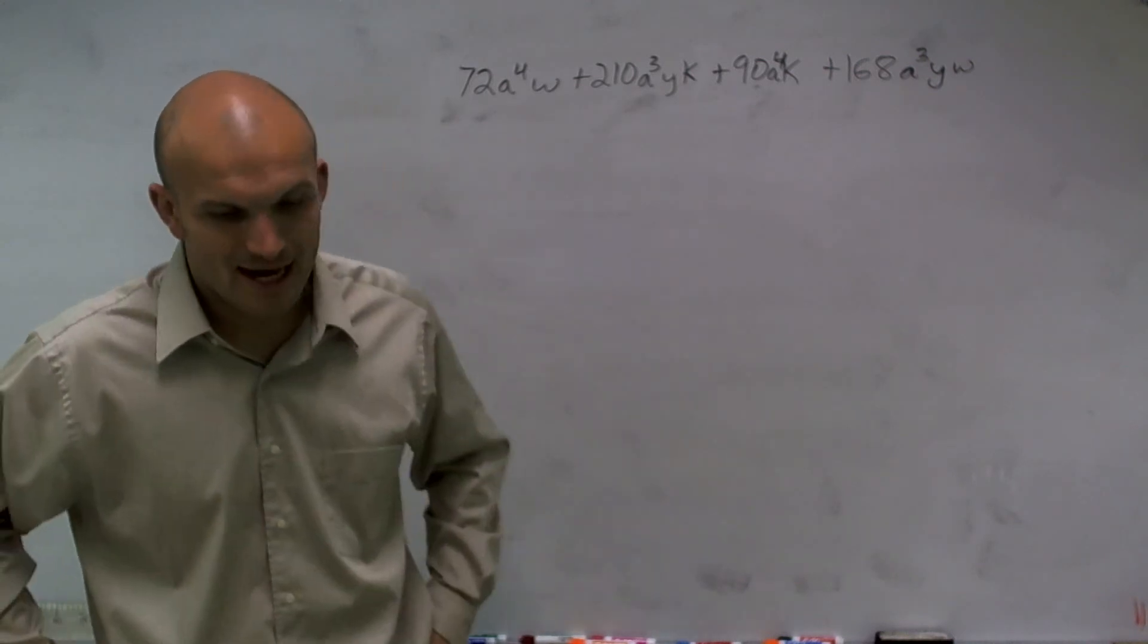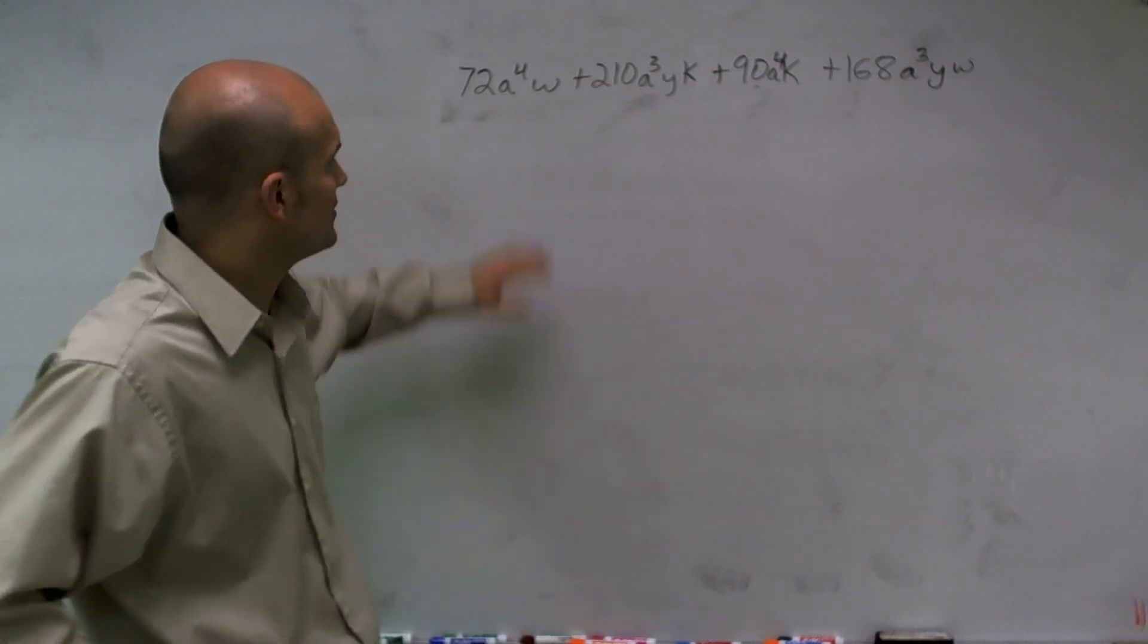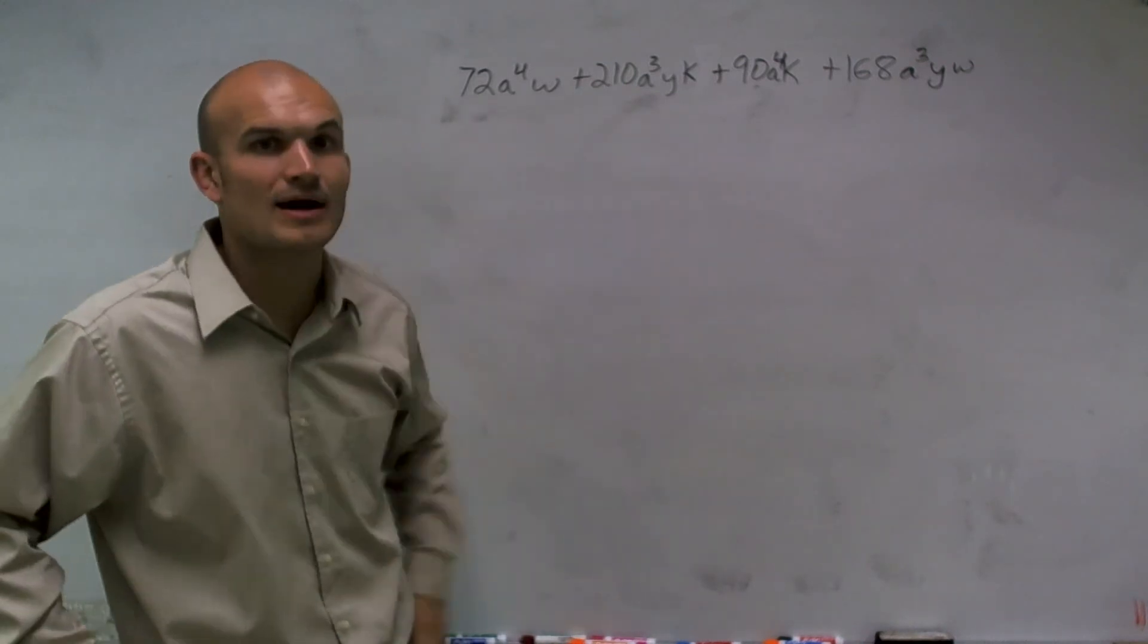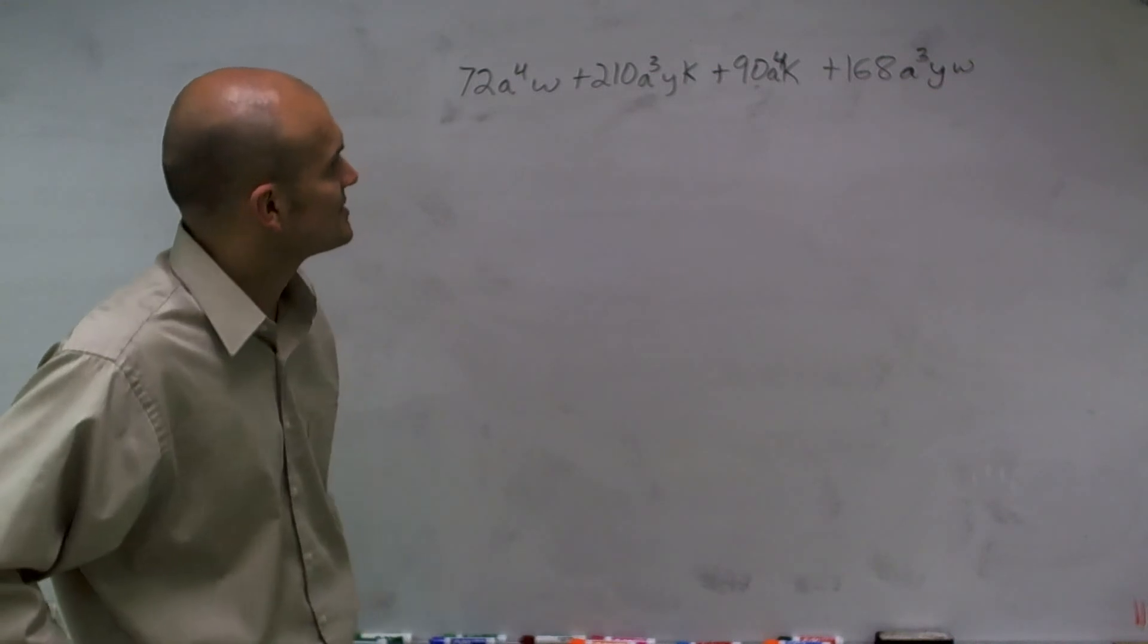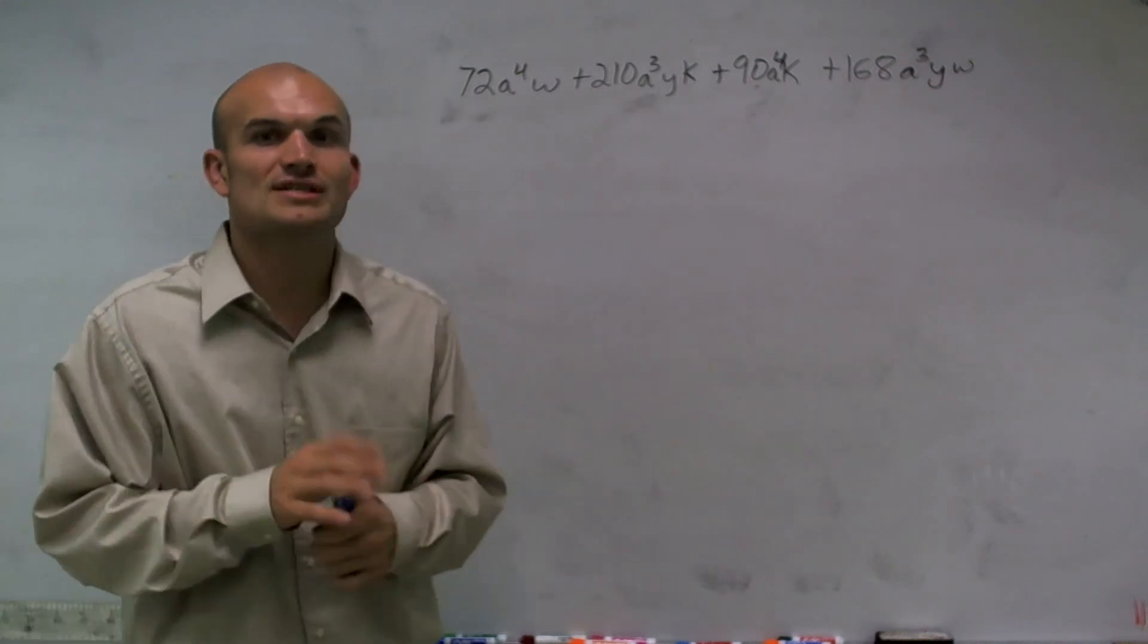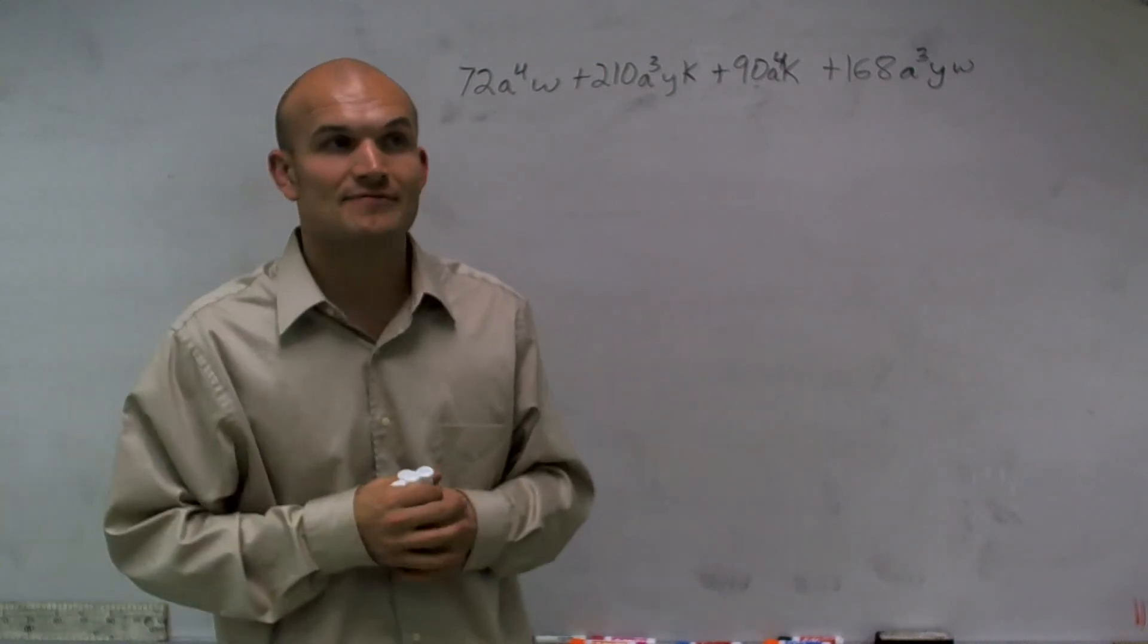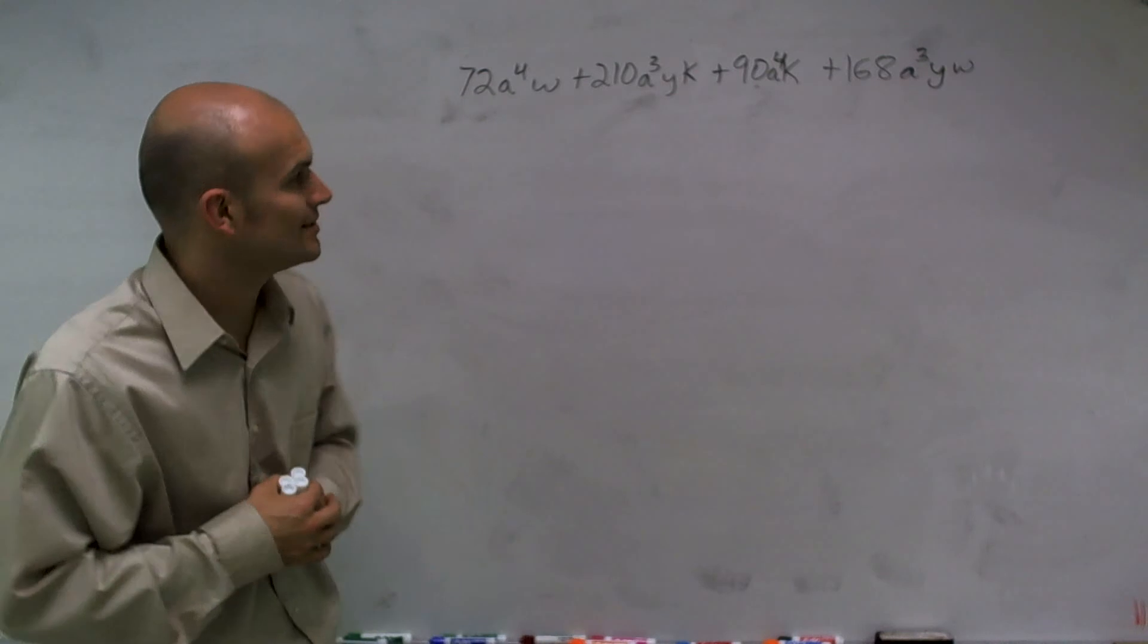But before I get into that, I look at all my letters, and I'm actually going to go about a different route with this. I'm going to factor out the GCF right at the end. What I'm going to do is factor by grouping first, and then I'll factor out any leftover GCF I have. And you'll see exactly how I'm going to do that.